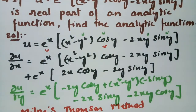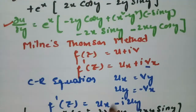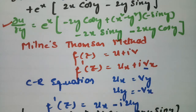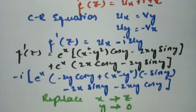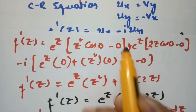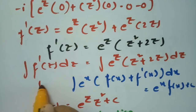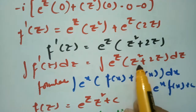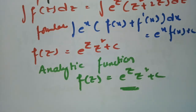To summarize: u was given, I computed derivatives with respect to x and y. Using Milne's Thompson method with f(z) = u + iv, I differentiated with respect to x and used CR equations to replace v_x with −u_y. After substituting x = z and y = 0, I integrated using the e^x formula to obtain the analytic function f(z) = e^z·z² + c.